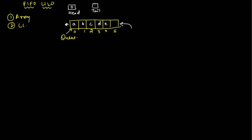You can also make tail point to the next location where data needs to be inserted. Head is currently pointing to zero because the front data is at the zeroth location, and tail is pointing to four because the last data is at the fourth location. There are two operations: enqueue — inserting data into the queue — and dequeue — taking data out of the queue.